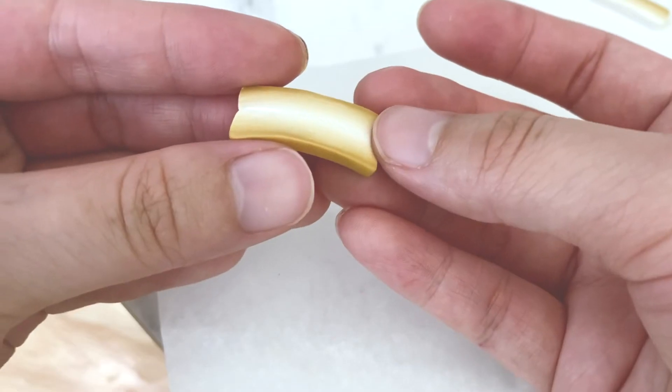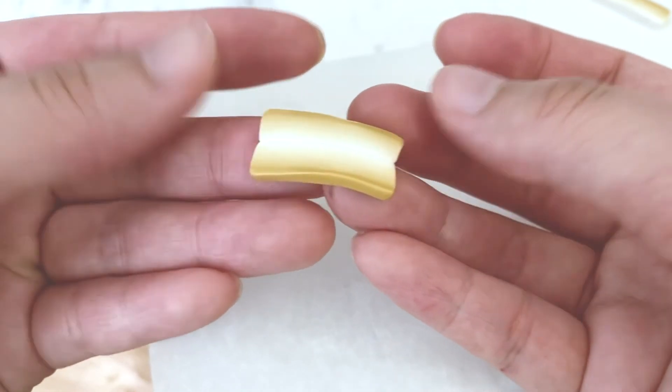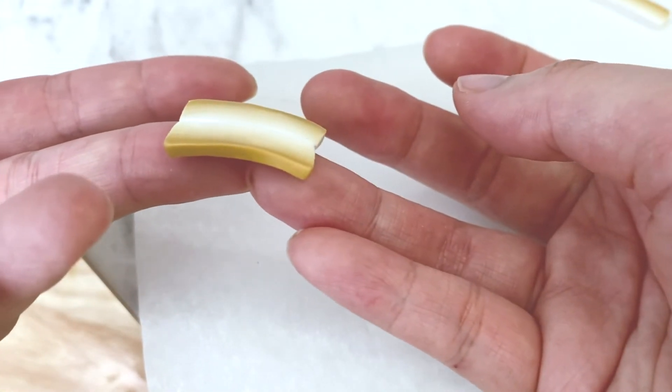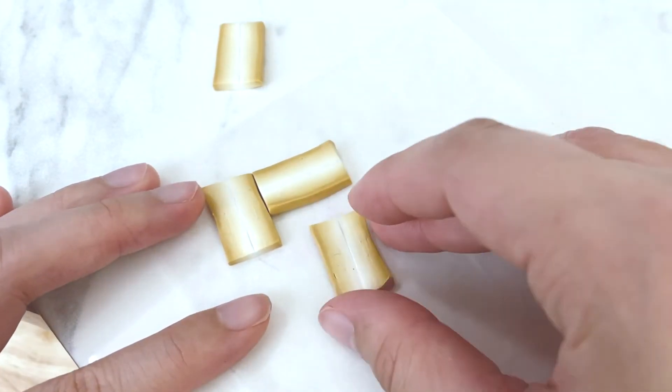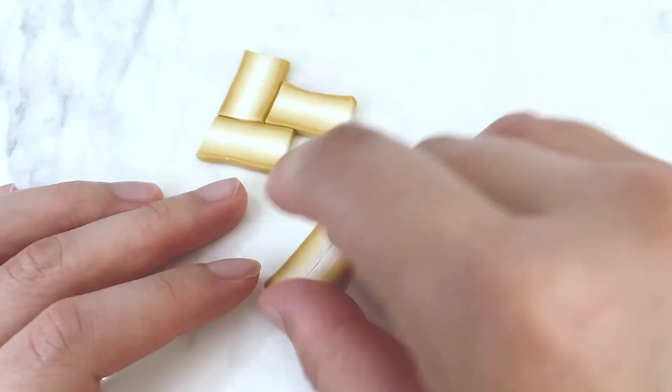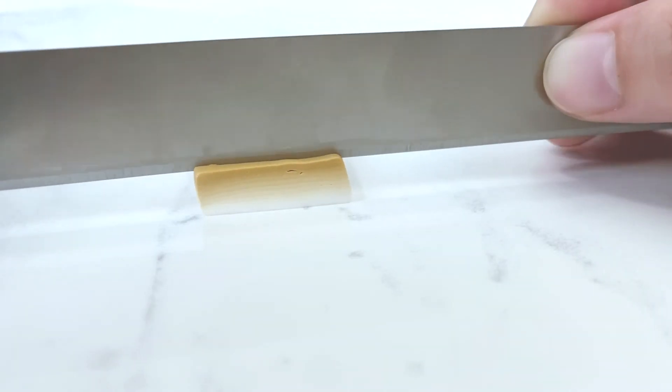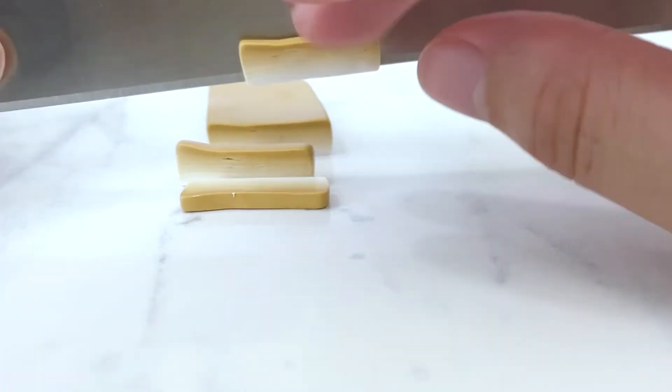Creating ribbons. Ribbons are gradient loaves but they give an illusion of a satin ribbon which you can assemble multiple ribbons and create the illusion of a basket woven pattern. To create a ribbon you need a gradient loaf that goes from light to dark.